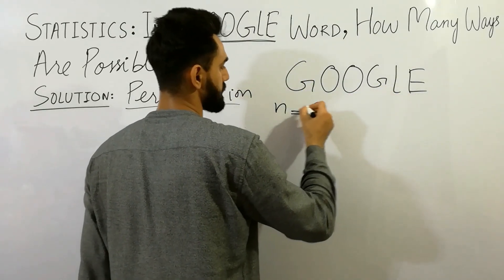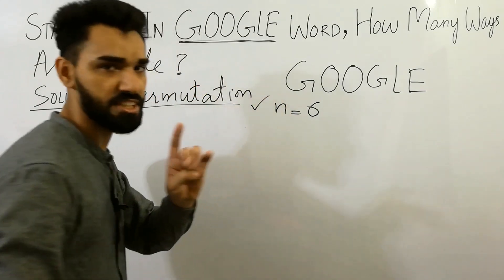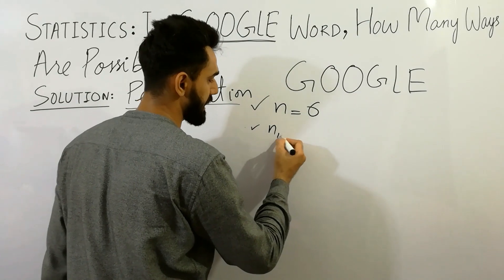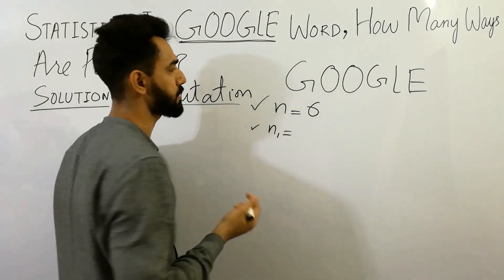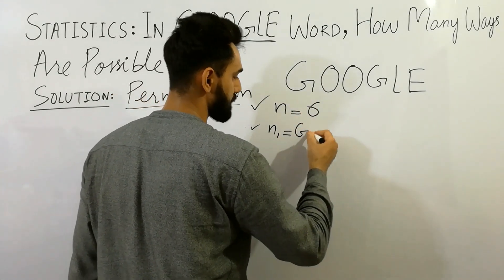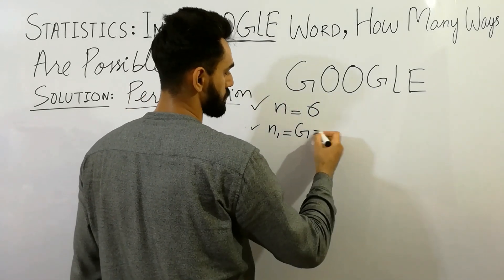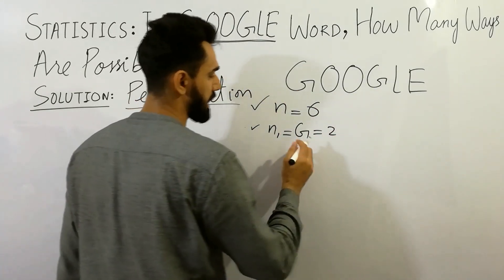So here, the number of values are 6. The first step, second step is here. First of all, take N1. What is N1? You can say that G is N1. Here are G: 1, 2. So here, N1 are G, N1 is 2.